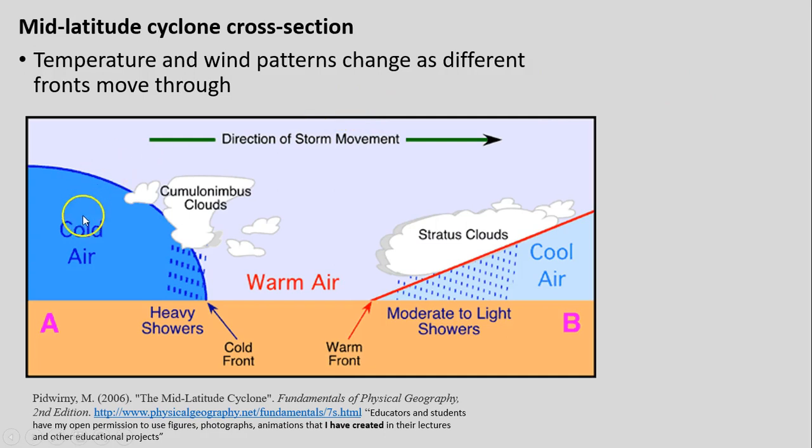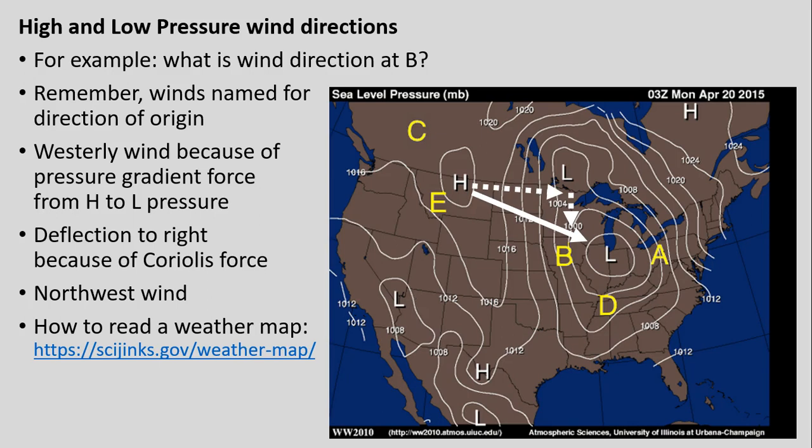Here's our cold front with our cold air behind it. You can see this is where we're getting a lot of those cumulonimbus clouds, very strong heavy storms, because it's lifting up that warm and oftentimes moist air. Over here we have our warm front that usually travels in front of this with the mid-latitude cyclone and is caught up to at some extent over time by the cold air in the cold front. We have our warm front where we get more moderate and light showers with those stratus clouds because that air is being lifted up more gradually over this front.